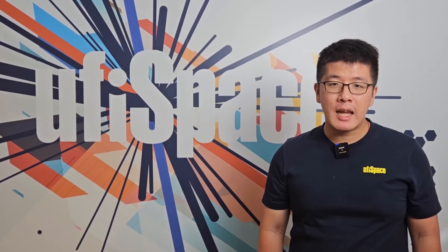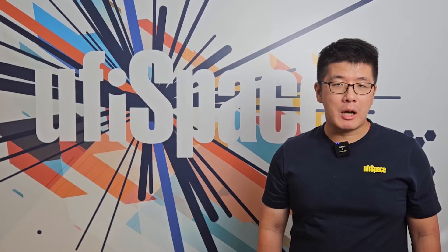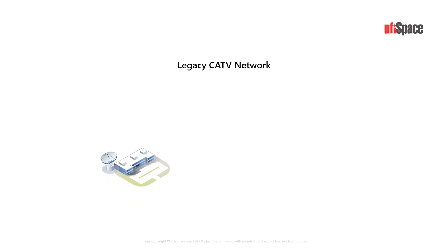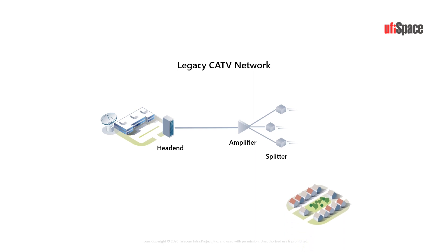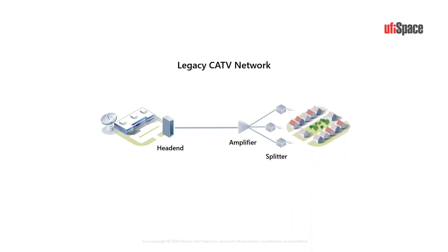Before we talk about DAA, let's talk about the cable network history. When the cable network first came in during the mid-20th century, it was called Community Antenna Television, or CATV. Cable operators used antennas to provide TV programs to subscribers, and it spread quickly across communities and rural areas in the US.